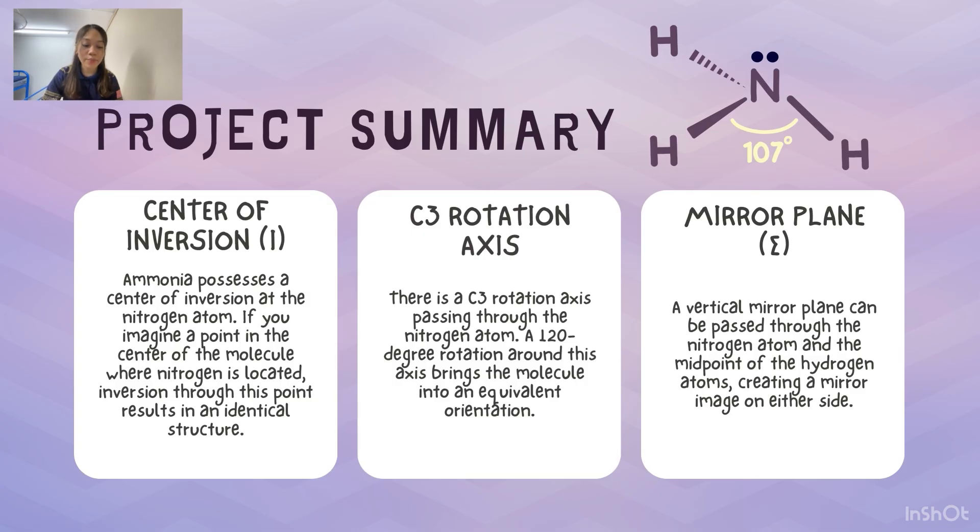Ammonia possesses a center of inversion at the nitrogen atom. If you imagine a point in the center of the molecule where nitrogen is located, inversion through this point results in an identical structure.